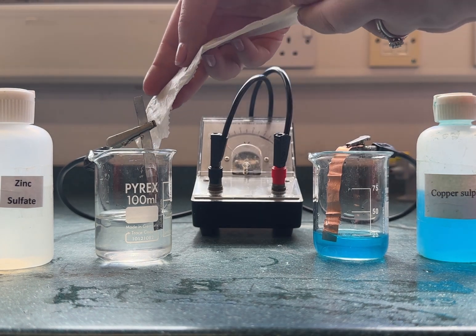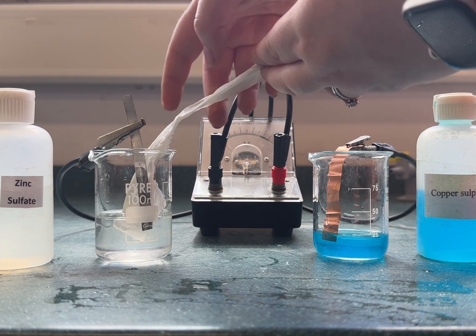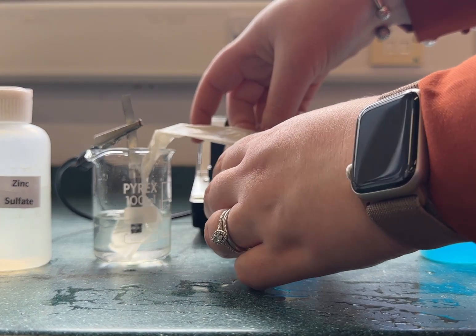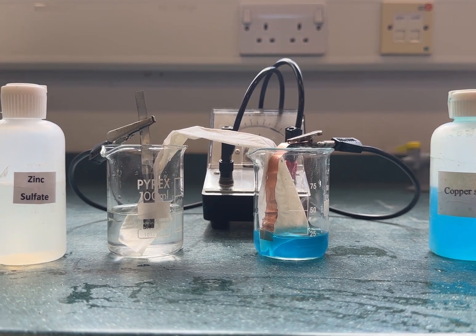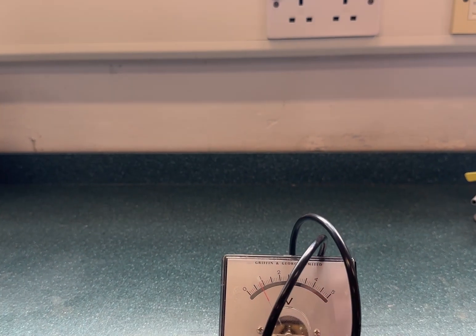During the reaction the zinc electrode will oxidize to become zinc ions and go into the solution and the copper ions in solution will reduce to copper atoms on the surface of the copper electrode. The sulfate ions are then able to pass over the salt bridge.